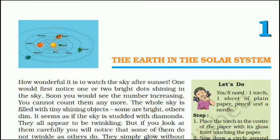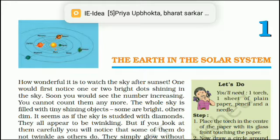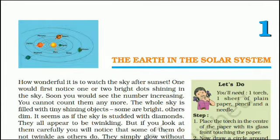Lesson 1: The Earth in the Solar System. How wonderful it is to watch the sky after sunset. One would first notice one or two bright dots shining in the sky. Soon you would see the number increasing. You cannot count them anymore. The whole sky is filled with tiny shining objects — some are bright, others dim. It seems as if the sky is studded with diamonds. They all appear to be twinkling.